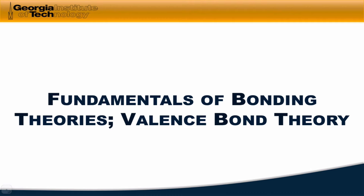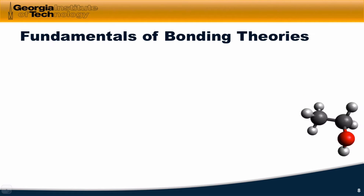I mentioned in the first video that there are as many bonding theories as there are chemists, but there are two major bonding theories that we're going to focus on here: valence bond theory and molecular orbital theory. In this video, we're going to talk about the fundamentals of all bonding theories and then dive into the specifics of valence bond theory, which was an early example of a bonding theory that has some shortcomings relative to molecular orbital theory, but has the virtue of simplicity.